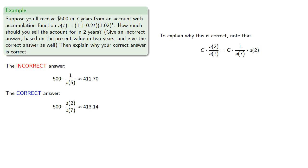So to explain why this is correct, let's take that expression apart. And this first factor, C times the reciprocal of a(7) represents the present value of our payoff, C.